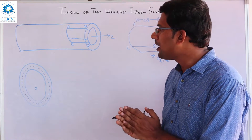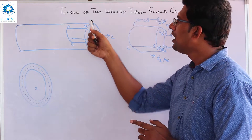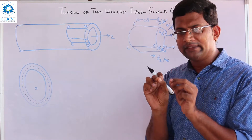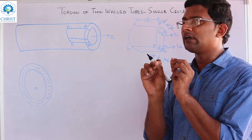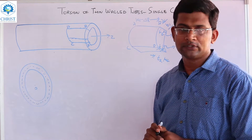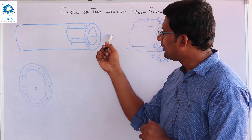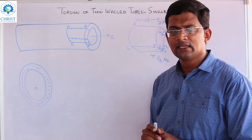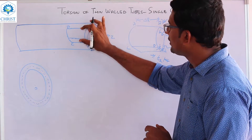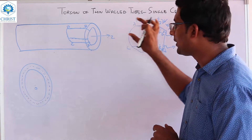We start with the tubular shaft. The thickness of the tube is a thin wall. The axis is around the axis and we have a small part.